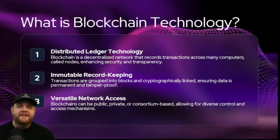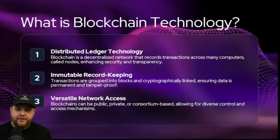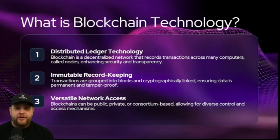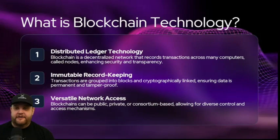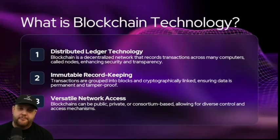A blockchain is a decentralized network that records transactions across many computers called nodes, enhancing security and transparency. The goal of a blockchain is to keep immutable records. Transactions are grouped into blocks and cryptographically linked, ensuring data is permanent and tamper-proof.